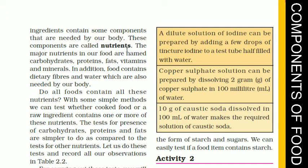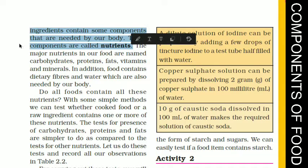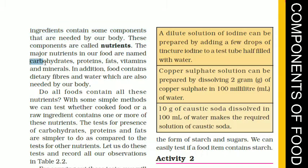These components are called nutrients. In this chapter, we are going to discuss different nutrients. The major nutrients in our food are carbohydrates, proteins, fats, vitamins, and minerals. Remember these — carbohydrates, proteins, fats, vitamins, and minerals.